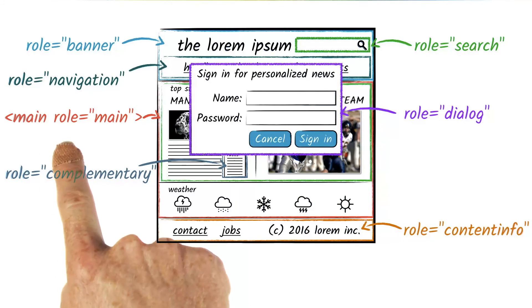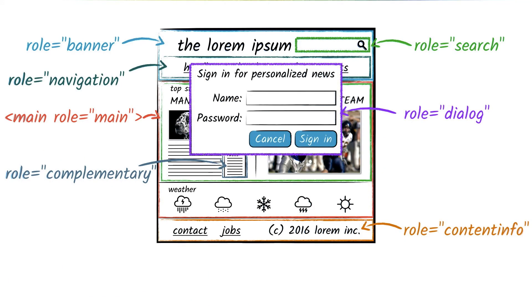For example, main with role equals main — breaking the general rule of not redefining default semantics, because the default semantics may not be fully supported in this case.